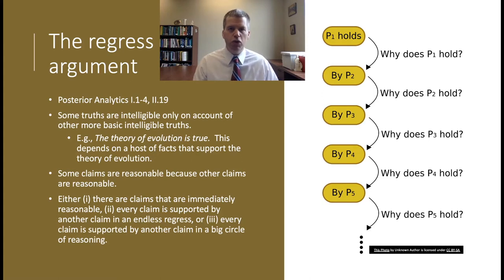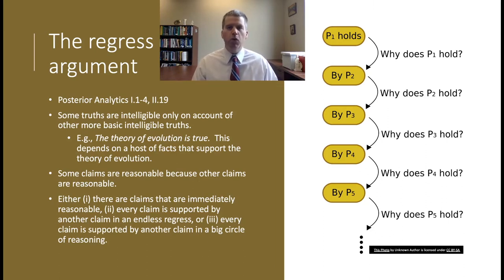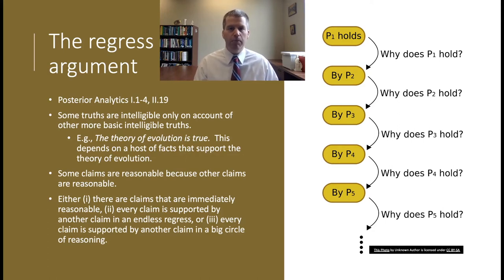Aristotle investigates how we should think about these dependence relations. Suppose we start with a claim that is reasonable only if another claim is reasonable, and we think about the dependence relations between those claims. We have one of three options. Either this chain of reasons will eventually give out in something that's immediately reasonable — P1 is reasonable because P2 is reasonable, because P2 needs P3, and so on — but eventually the chain stops with a claim that is immediately reasonable and doesn't need to be defended by another claim. That's one option.